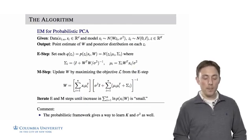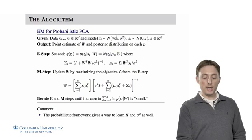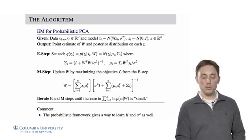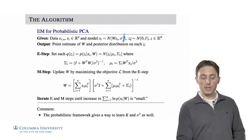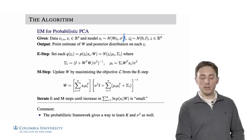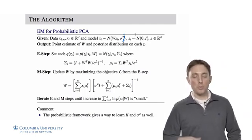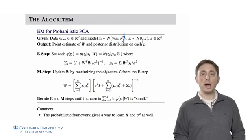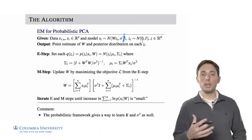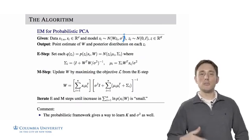We're given data X1 through Xn, where each data point is in Rd, where D is a high dimensional space. We're going to model each of these data points as being a multivariate Gaussian with mean equal to the matrix W times Zi plus sigma squared I. Each of these vectors Zi, which is a K dimensional vector, is standard Gaussian. So W is D by K, and Z is a K dimensional Gaussian. What we're going to output is a point estimate of W that maximizes the marginal likelihood, and also a conditional posterior distribution of each Zi, which gives us our posterior belief about what the low dimensional embedding should be. We also get some distribution on that embedding.